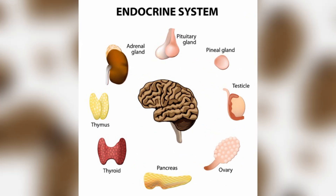What is endocrine? Endocrine glands include the hypothalamus, pituitary, thyroid, parathyroid gland, adrenals, pancreas, ovaries, testes, and pineal.